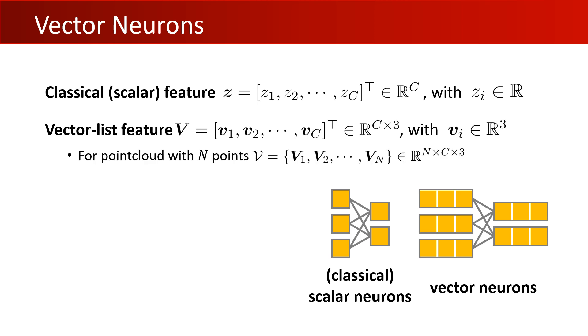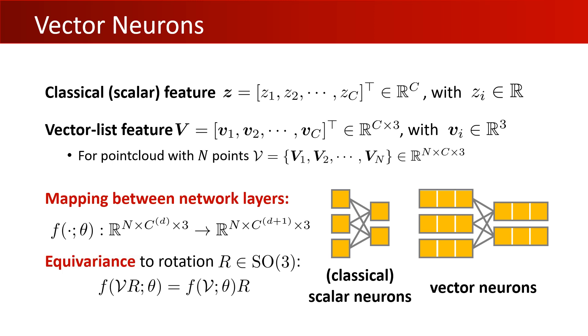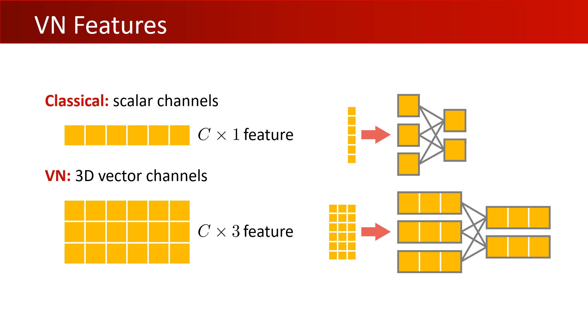For an unordered set of n points in a point cloud, we can consider a collection of n such vector-list features. Similar to standard neural networks, the number of latent channels C can change between layers via mapping f with learnable parameter theta. Using this representation, the action of a rotation is made simple to implement as it involves the application of a standard rotation matrix.